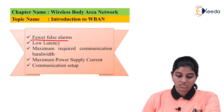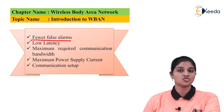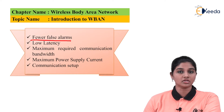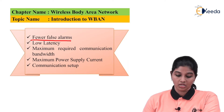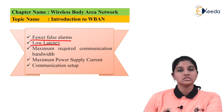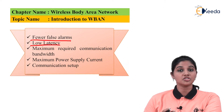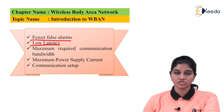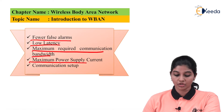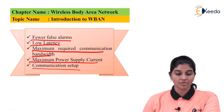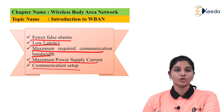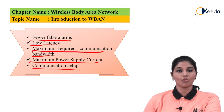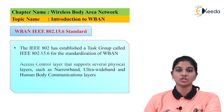The next requirement is few false alarms. In case of biosensors, a threshold value is set, and when a certain parameter increases or decreases beyond the threshold it may generate a false alarm. So less false alarms are required. The next requirement is low latency — as the signals deal with the human body, it is very important that delay does not occur during transmission and reception. Other requirements include maximum required communication bandwidth, maximum power supply current, and a simple and economical communication setup.